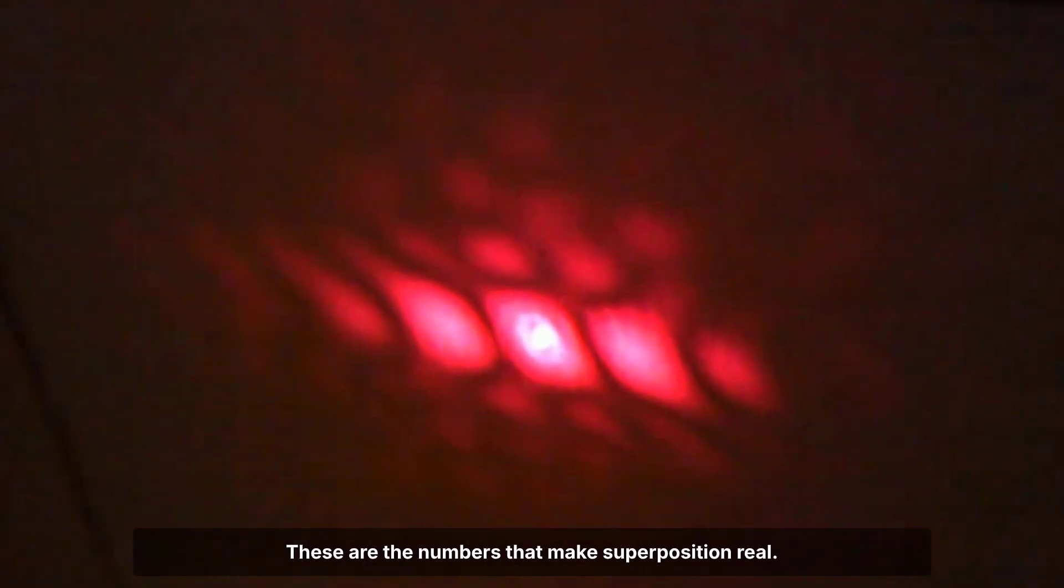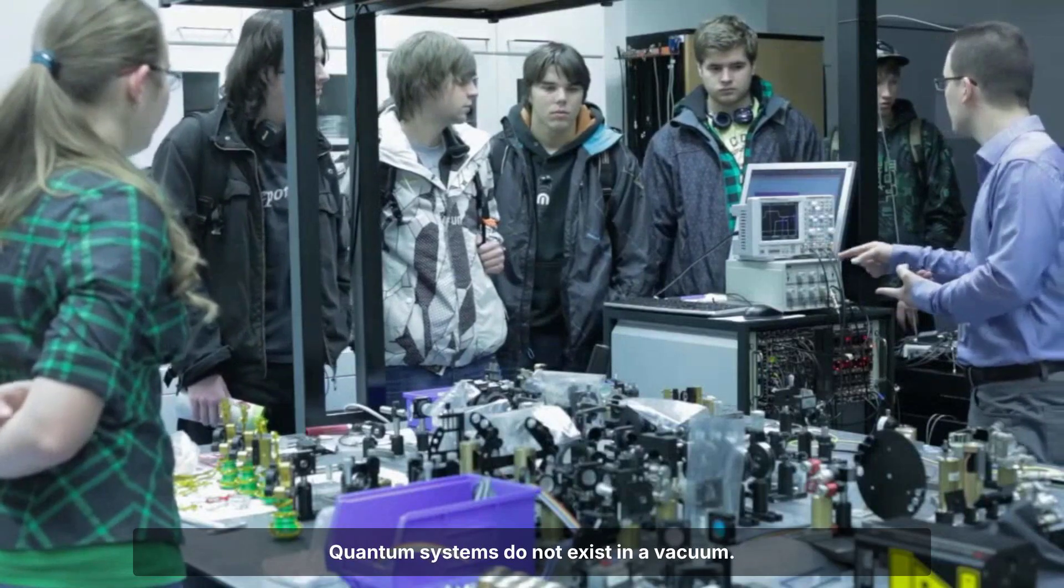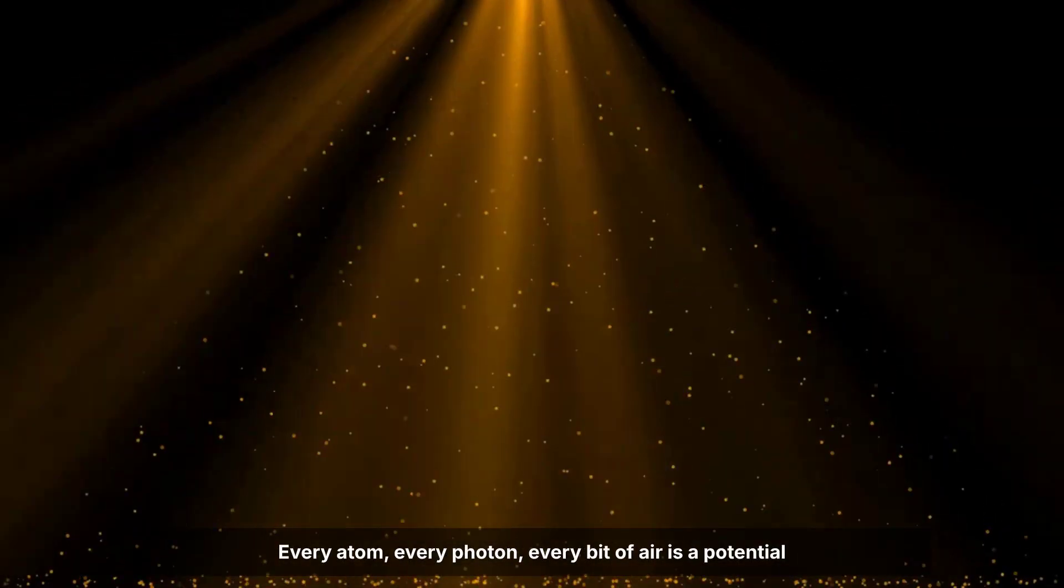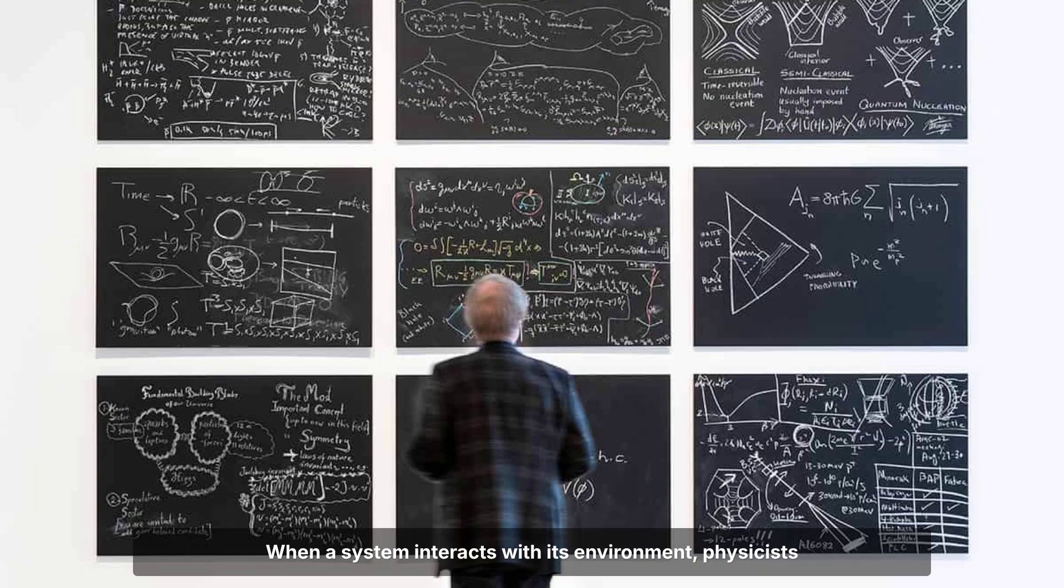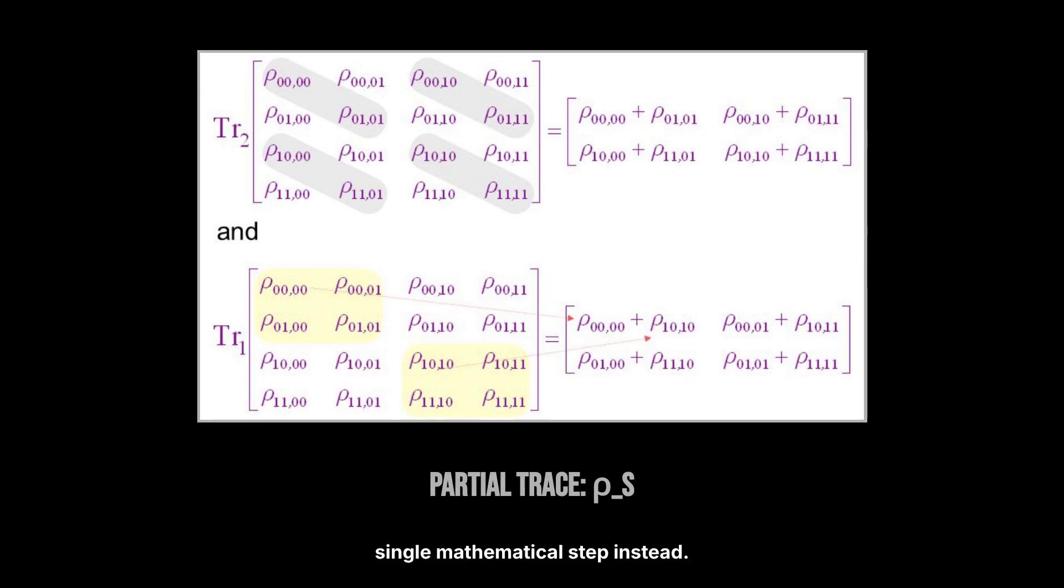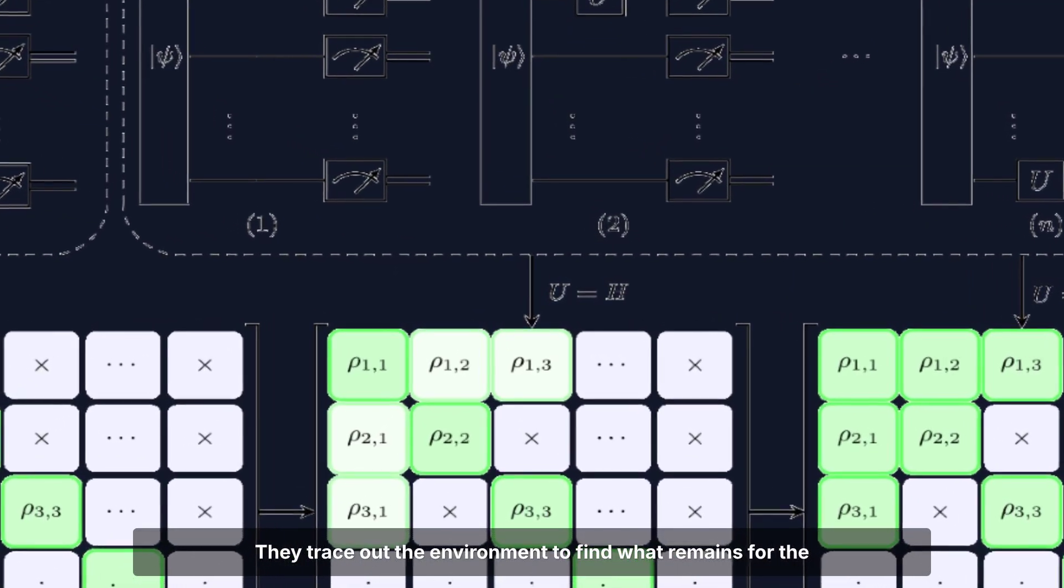These are the numbers that make superposition real. Quantum systems do not exist in a vacuum. Every atom, every photon, every bit of air is a potential eavesdropper. When a system interacts with its environment, physicists stop trying to track the entire universe and perform a single mathematical step instead. They trace out the environment to find what remains for the system alone.